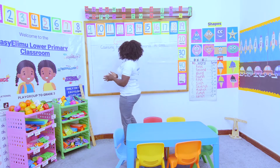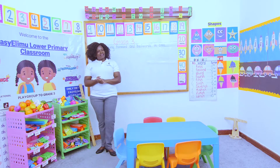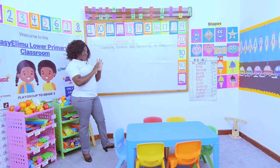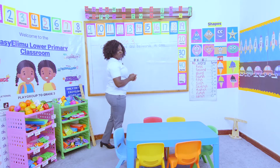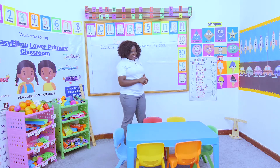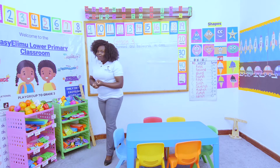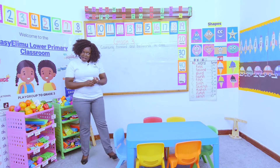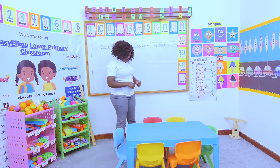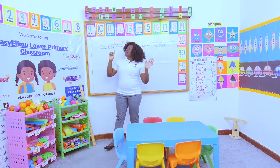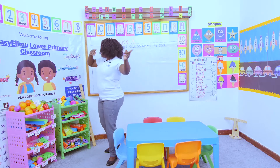Today we want to count forward and backwards in ones, but now we are increasing our numbers. Remember: in Grade One we did numbers one up to 50; in Grade Two we did numbers one up to 100; now in Grade Three we are doing numbers 100 to 1000.